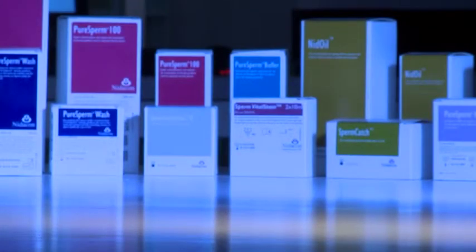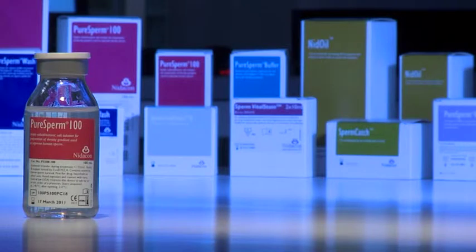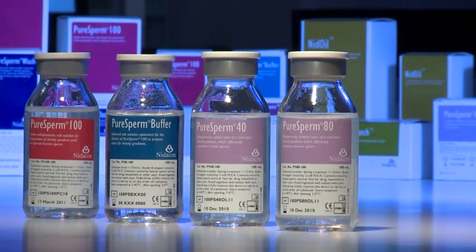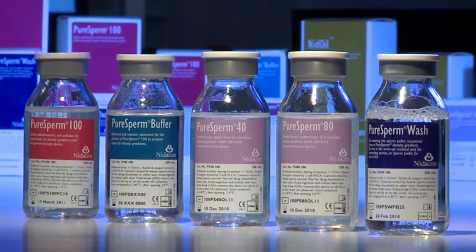To prepare a gradient, you need PureSperm 100 and PureSperm Buffer to dilute to your desired concentrations. We recommend 40% and 80%, or use the ready-to-use PureSperm 40 and 80. After the gradient preparation, PureSperm Wash will be needed.